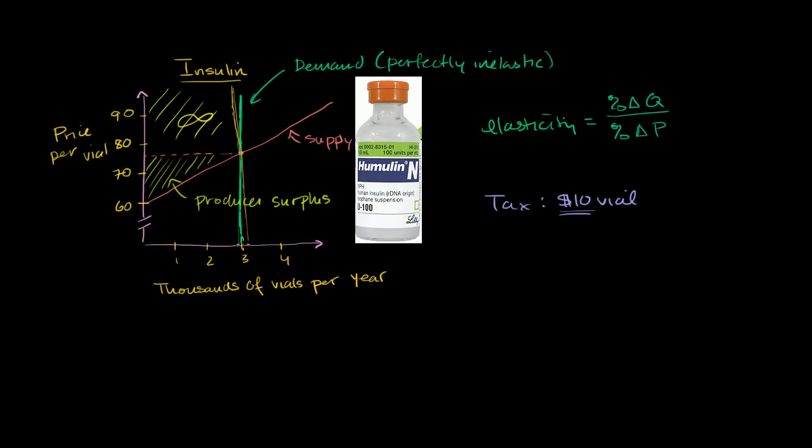For the producers, this is what they need to get. If you want them to produce 3,000 vials, they need to get $75. If you want them to produce the first vial, they need $60. What the producers need to get plus the tax gives us a new curve. For the first vial, the producer needs $60, but add the tax and it's $70. For 3,000 vials, producers need around $75-76, add 10 and it gets to $85-86. You could view this as price from the consumer's point of view, or the supply plus tax curve.